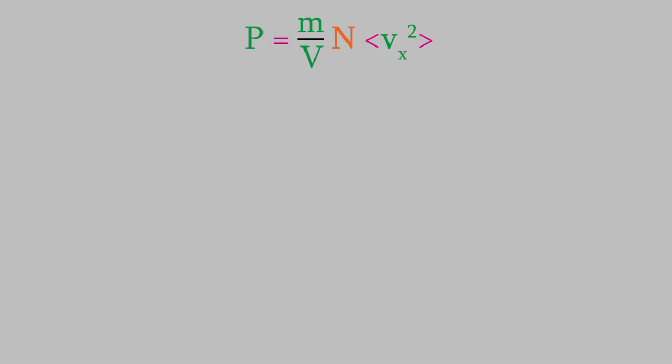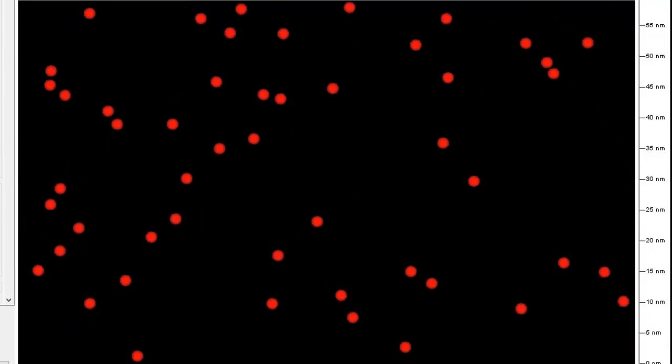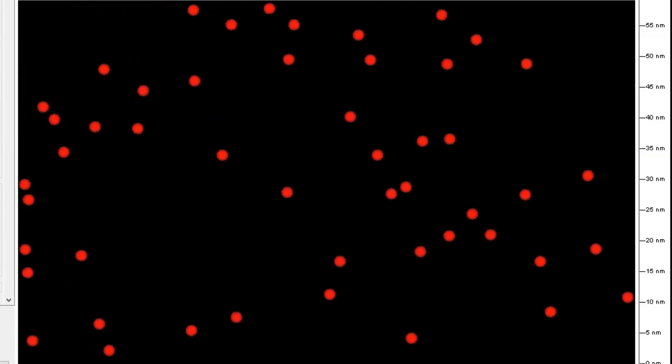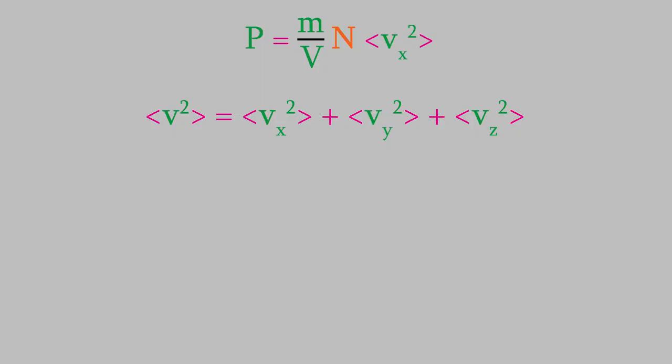But we're still not quite done. The equation has the average velocity in the x direction, but we can really only measure the overall velocity — not the velocity along only the x, y, or z directions. It would be nice to use the overall velocity v squared instead. It turns out that v squared is just a vector sum of the velocities along the x, y, and z directions: v² = vx² + vy² + vz². Since the particles should be moving just as quickly in the x direction as in y or z, vx, vy, and vz should all be equal, so v² = 3vx². Solving for vx² gives vx² = v²/3.